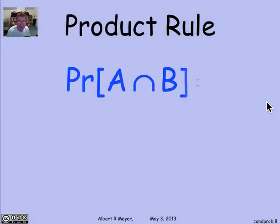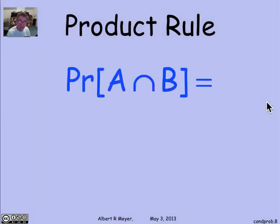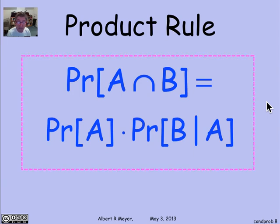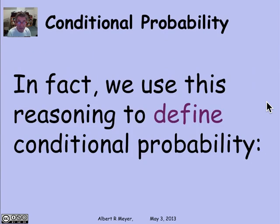Formally speaking, what we were using was the product rule: the probability that event A occurs and event B occurs is simply the probability of A times the probability of B given A. That's the fundamental rule of conditional probabilities — the product rule — and it's something to be memorized. In fact, this product rule is not a corollary; it's really the definition of conditional probability.